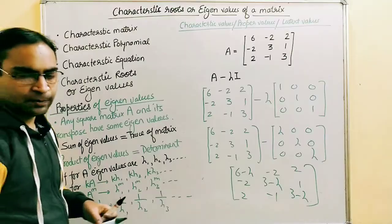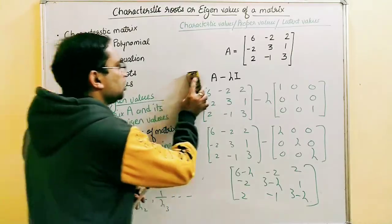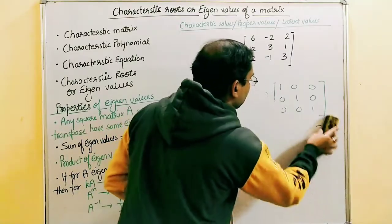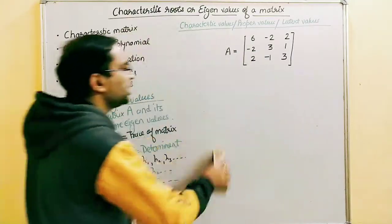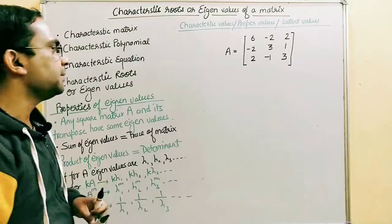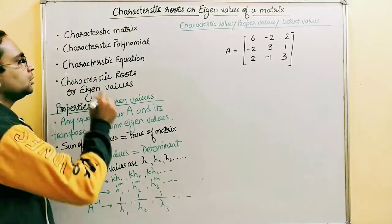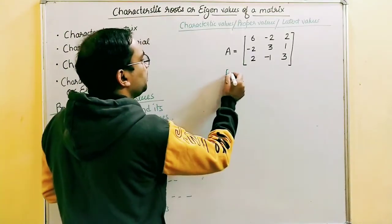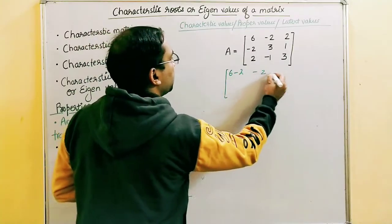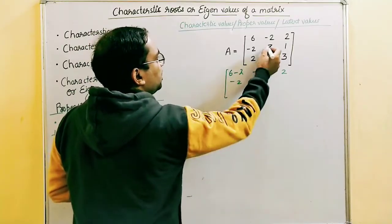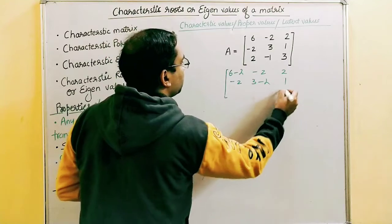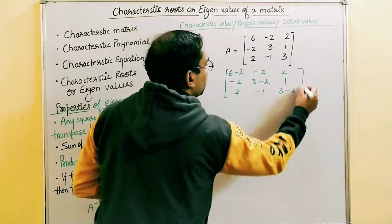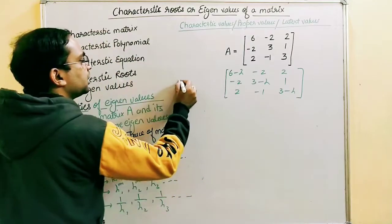Next is the characteristic polynomial. To obtain it, we need to expand the determinant of the characteristic matrix as a polynomial in lambda. Let's rewrite the characteristic matrix: [6-λ, -2, 2; -2, 3-λ, 1; 2, -1, 3-λ].